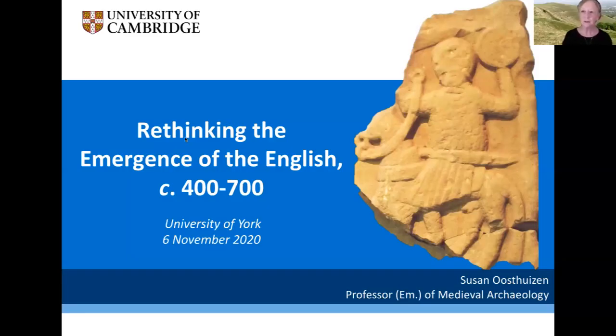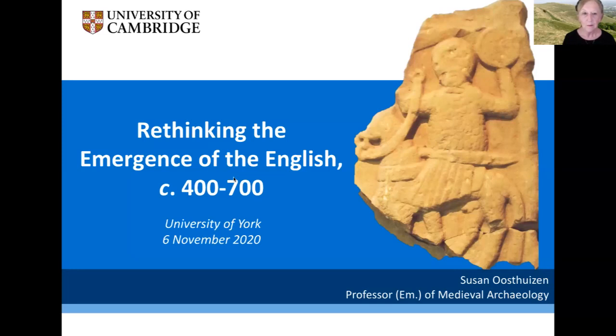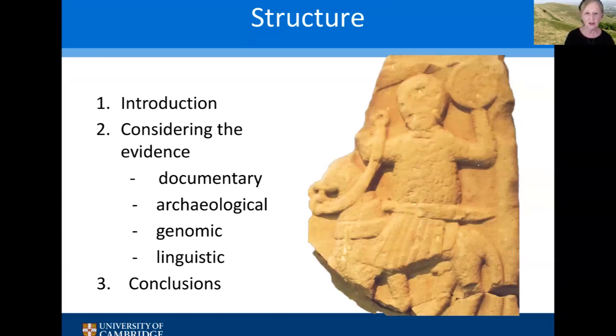Hello everyone, thank you for coming. It's a nice thing to be doing indoors on a day like this. So here's my lecture — it's going to cover just part of my book, the first part, because there isn't enough time to do everything, but I hope it will whet your interest. This is the structure of where we're going this evening. I've got an introduction and I want to say something about the evidence for early Germanic immigration into early medieval England under four headings: the documentary evidence, the archaeological evidence, the genomic evidence, and the linguistic evidence, and then draw some conclusions about its strength.